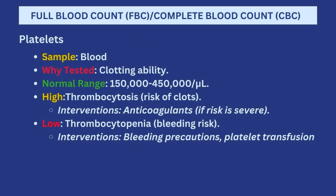Still on the full blood count, platelet levels can also be checked as they give a pointer to the clotting ability of the patient. Normally it should be between 150,000 to 450,000. When the levels are high, that is thrombocytosis, meaning there is a high risk for blood clots. Blood clots could get into the lungs, blood vessels, or block anywhere in the body, causing serious issues. Definitely you would be expecting the patient to go on anticoagulants.